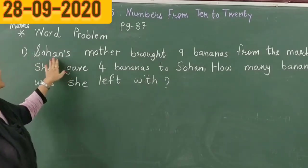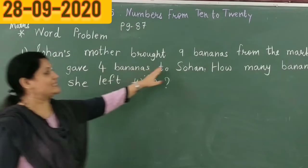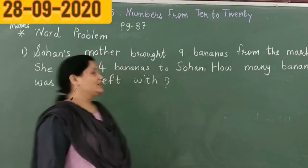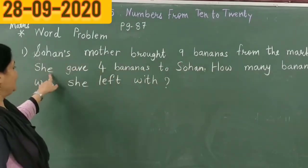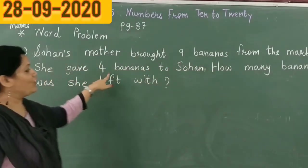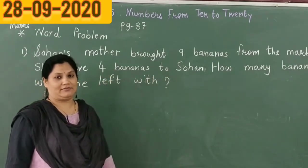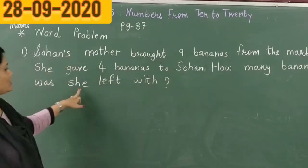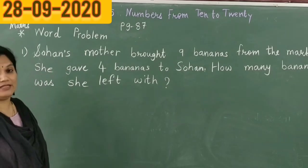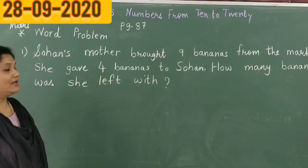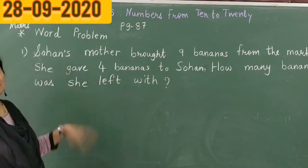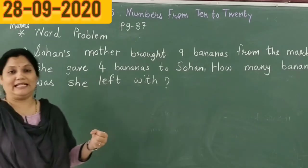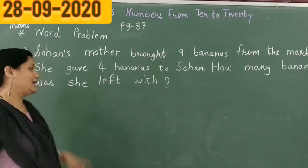Stories also are here. Soha's mother brought 9 bananas from the market and she gave 4 bananas to Soha. How many bananas was she left with? Soha's mother went to market and she bought 9 bananas.